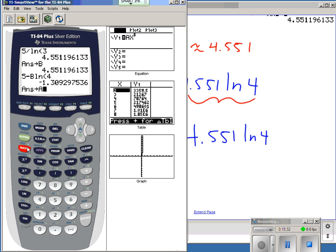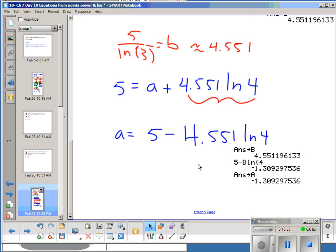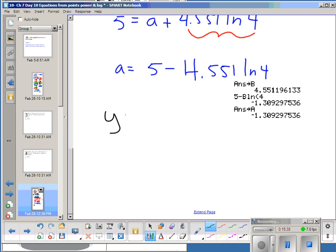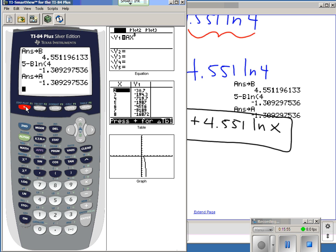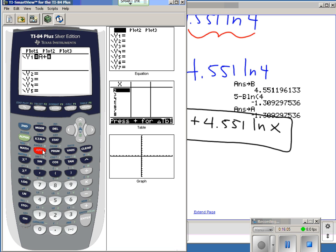There we go. Now I can write my equation. And my equation is Y equals A, make it 1.309, plus B, 4.551 LN of X. There's my equation. Now again, I like to check to make sure I did this correctly. So I'm going to go to my Y equals. And I'm going to delete this. I'm going to have A. And I'm going to put plus. Actually, let's just clear this. I'm going to do A plus B LN of X. Where am I? I somehow got off track. Let's try this again. Y equals A plus B LN of X.